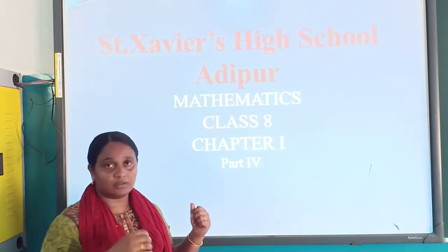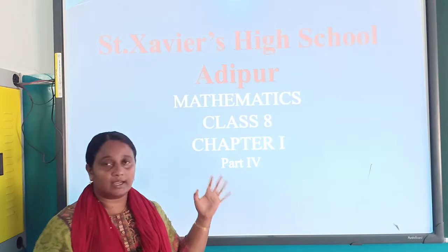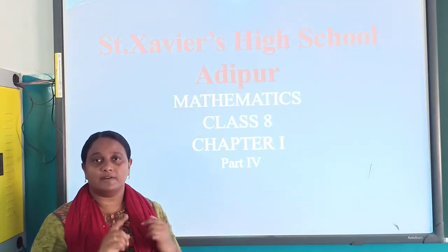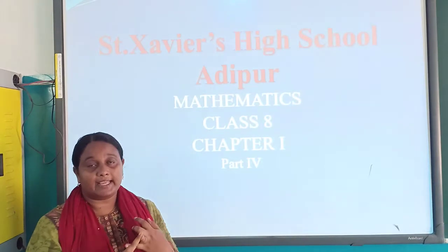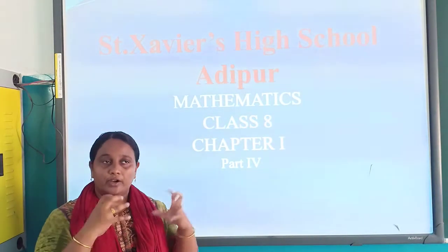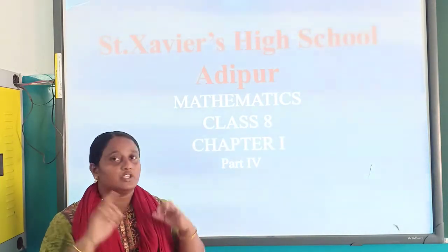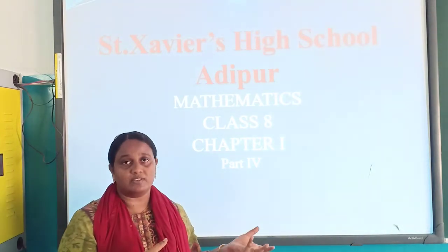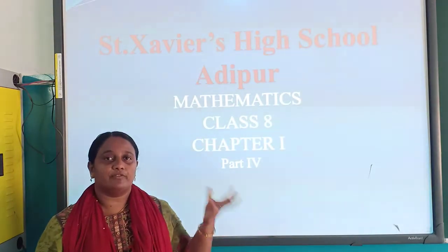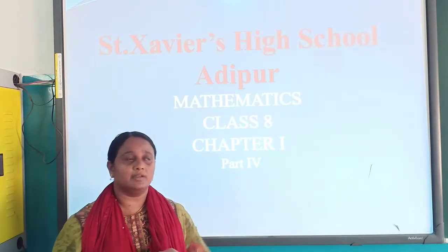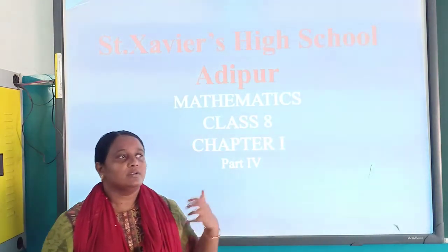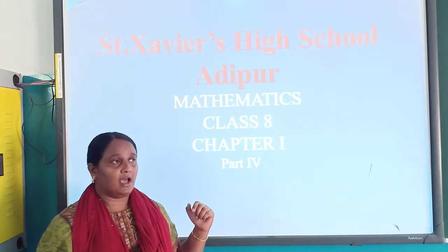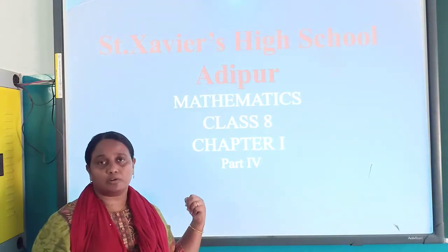Now we are continuing with the properties of rational numbers. In the last class we discussed the first property — the closure property. What was the closure property? If we are doing any operation such as addition, subtraction, multiplication, or division, the answer will also belong to the same number system. For example, if we add two rational numbers, the answer should also be a rational number. We discussed all four operations under the closure property.